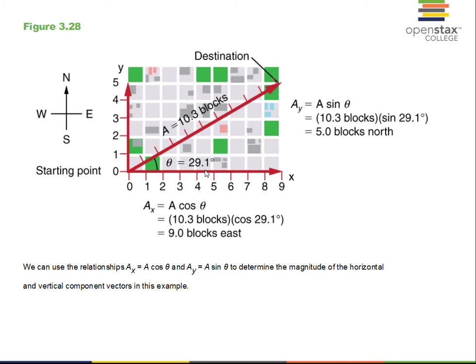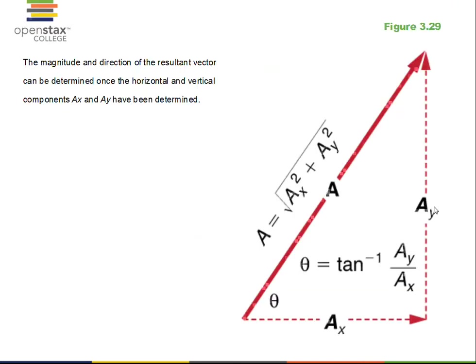When we want to reconstruct a vector from its components — which is a theme in this chapter — we add the x-components of the two vectors together, and separately add the y-components. We never add an x-component to a y-component; we only add x to x and y to y.